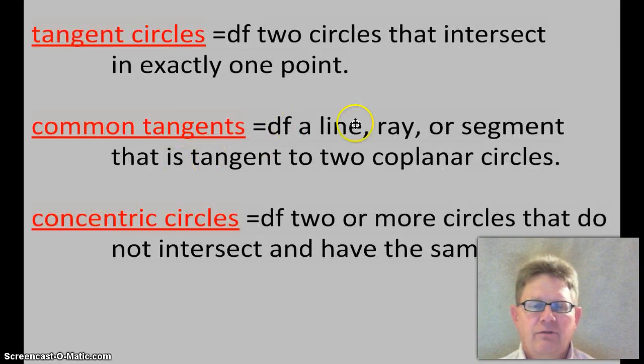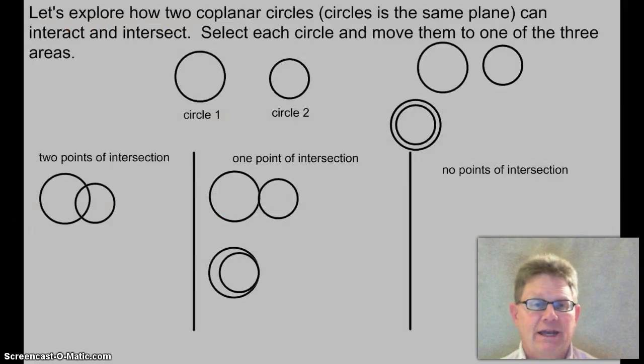Common tangents are defined as a ray, line, or segment that is tangent to two coplanar circles. And we're going to play around with that right now. How many common tangents do these two interacting circles have? If you said two, you are correct.